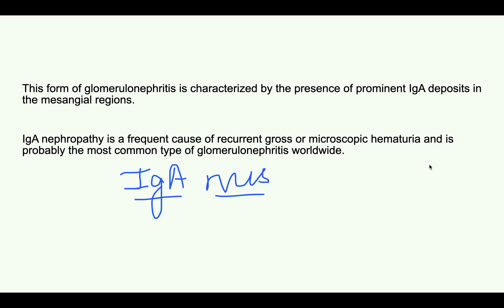IgA nephropathy is the most common type of glomerular nephritis, and thirdly, it is a frequent cause of recurrent gross or microscopic hematuria. Now we will go to the clinical picture, then discuss the pathology, and then the microscopy.